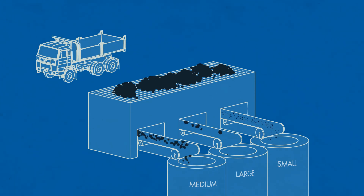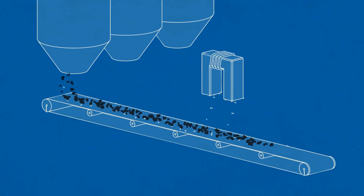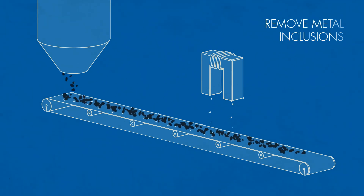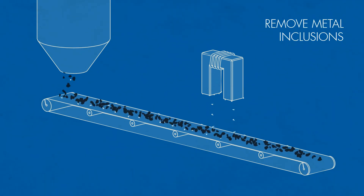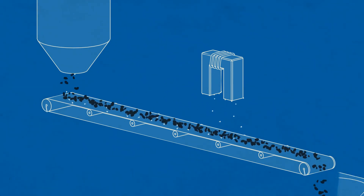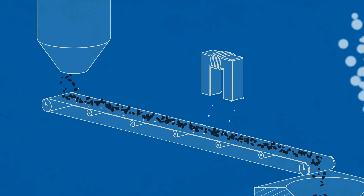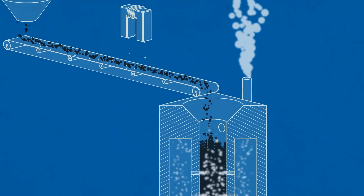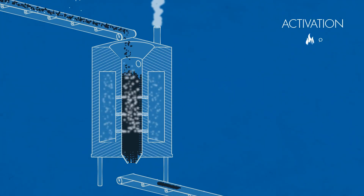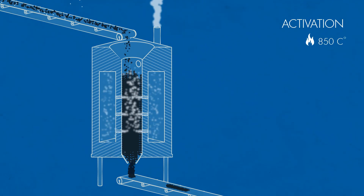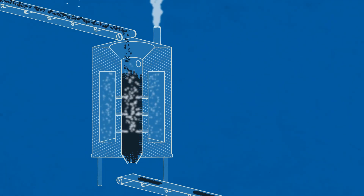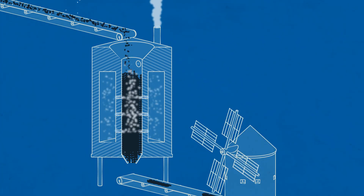After sorting, the raw material passes through a belt conveyor and a magnetic separator to remove possible metal inclusions. Then the sorted coal is fed into a special furnace, where it is activated by a vapor gas mixture at a temperature of 850 degrees Celsius.